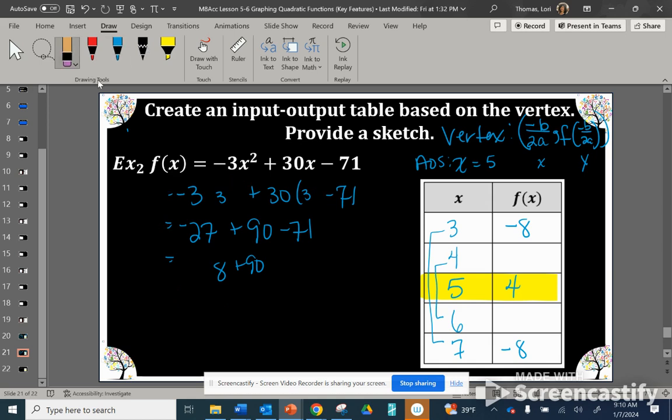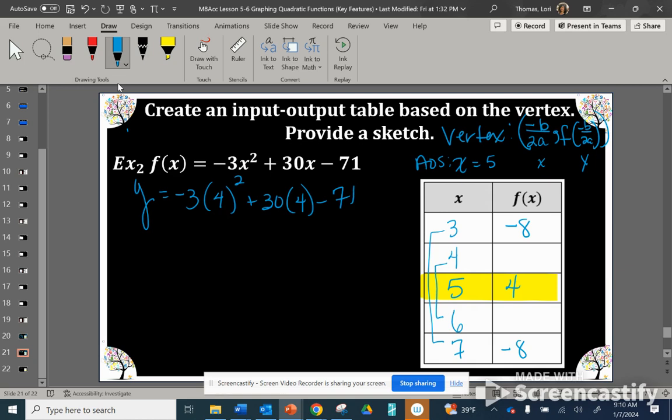Let's get one more set of corresponding points. I'll plug in 4. To get the y value when x is 4, we do order of operations: square 4, that's 16, then 16 times negative 3 is negative 48, plus 30 times 4 is 120, minus 71. Combining negative 48 and negative 71 gives negative 119, plus 120, and y equals 1. So 4 comma 1 corresponds to 6 comma 1.